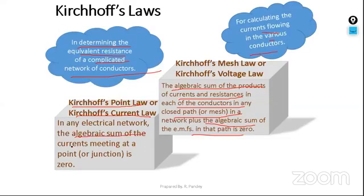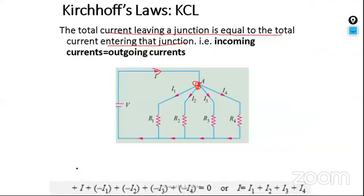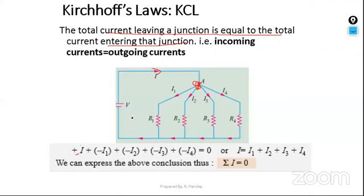The algebraic sum of currents meeting at a point is zero. For entering currents plus and leaving currents minus: I + (-I₁) + (-I₂) + (-I₃) + (-I₄) = 0. Moving the minus terms to the right side: I = I₁ + I₂ + I₃ + I₄. We can express this conclusion as: the summation of current equals zero. At the junction, the current algebraic summation will be zero.